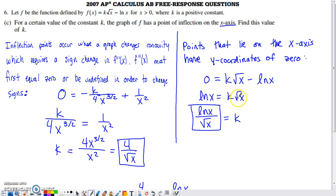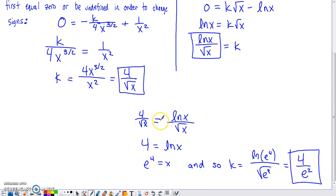So if we set the function itself equal to zero, and then solve that for k, I can add the natural log to that side. I can divide by the square root of x. And what I have is these two different expressions for k, but if k is equal to both of them, I should just be able to set those expressions equal to each other and solve for x.